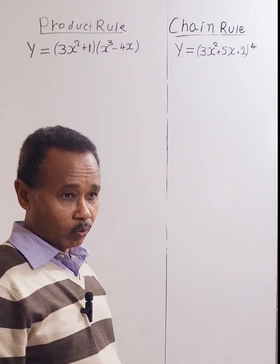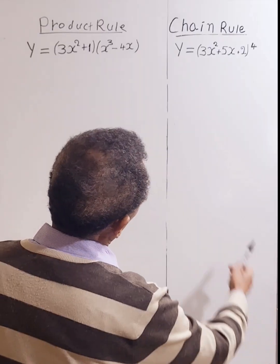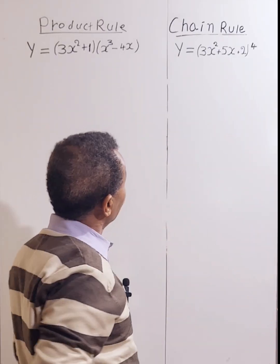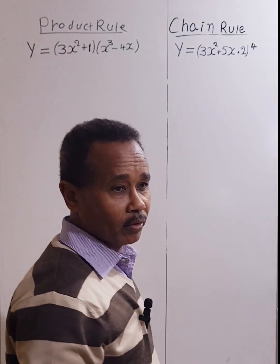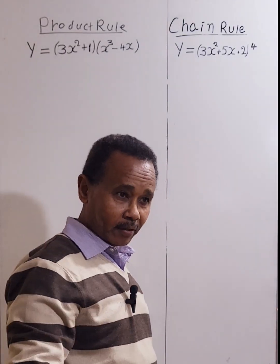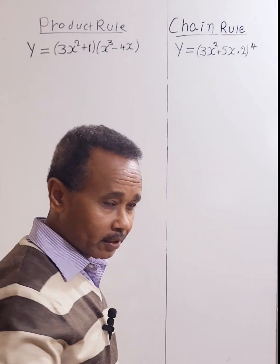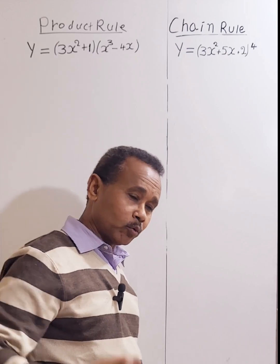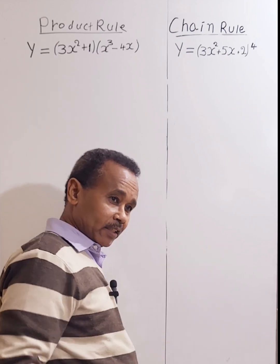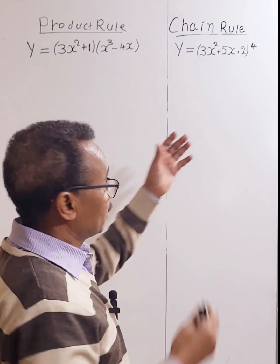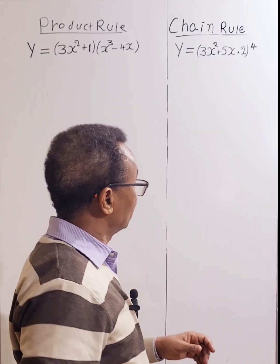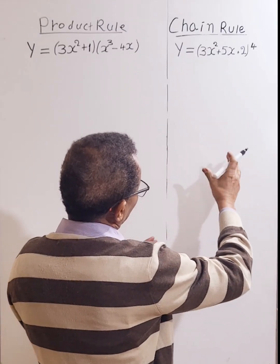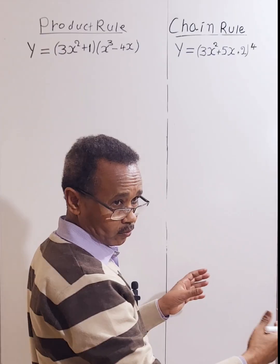Let's start with the right side. The chain rule is a formula that helps differentiate a function which is made of two or more functions — also known as a composite function. It simply helps to differentiate a function of a function.